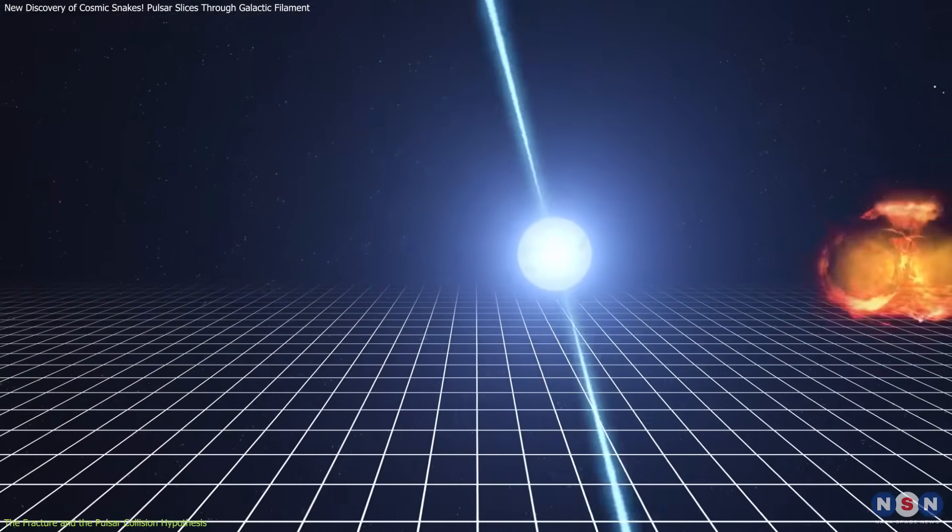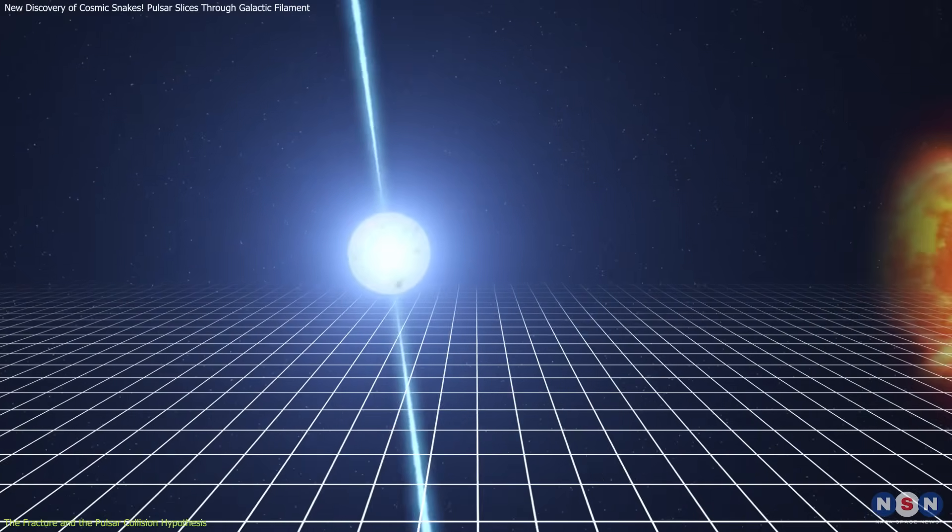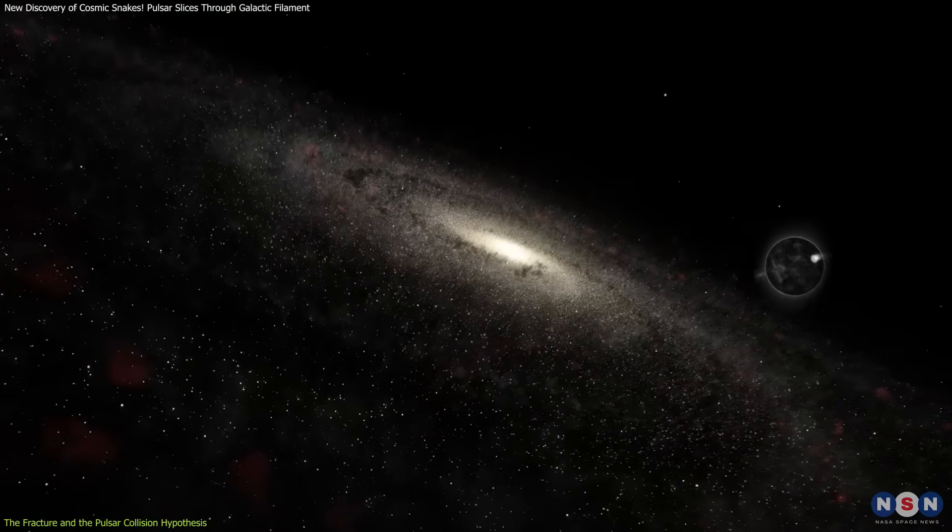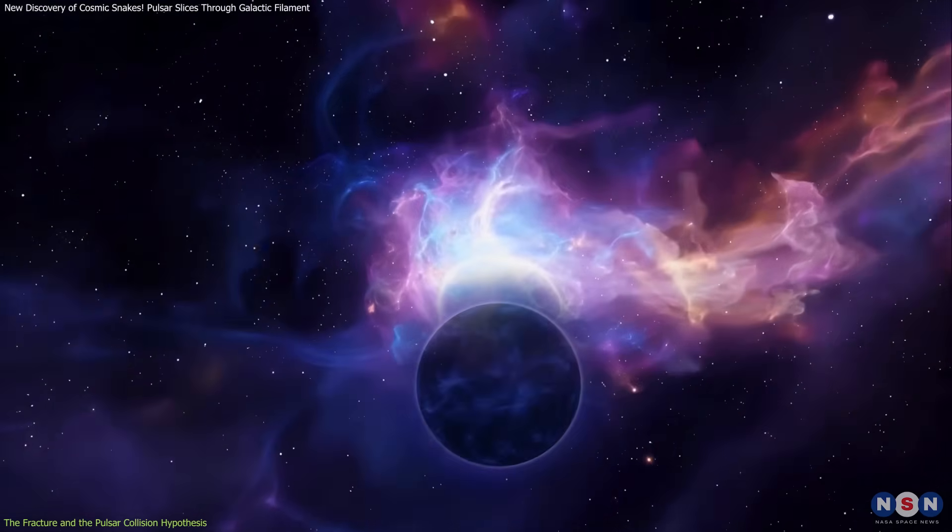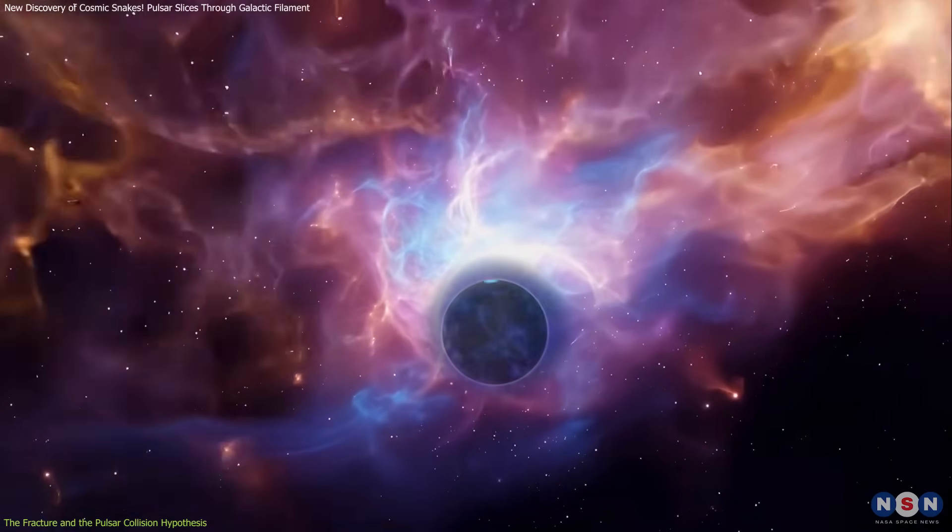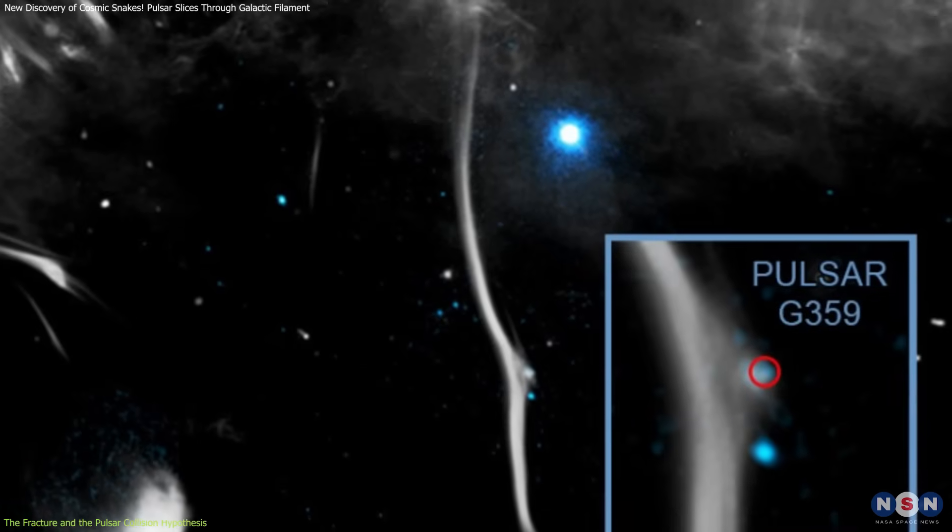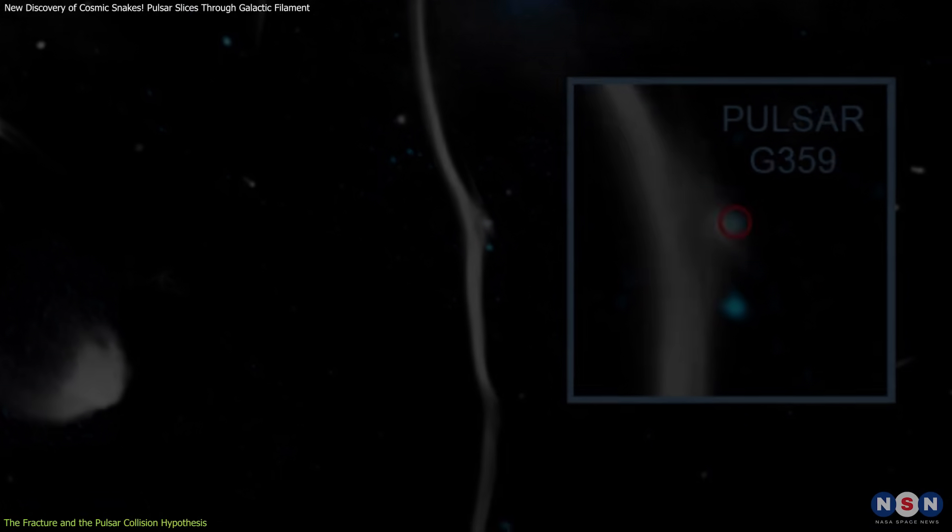Some pulsars are runaway neutron stars, ejected at high speeds by uneven forces during their supernova birth. This can launch them across the galaxy like cosmic cannonballs. When such a star crosses paths with a dense structure like the Cosmic Snake, its immense kinetic energy can warp the local magnetic field and distort the gas, causing the filament to kink—just as observed.